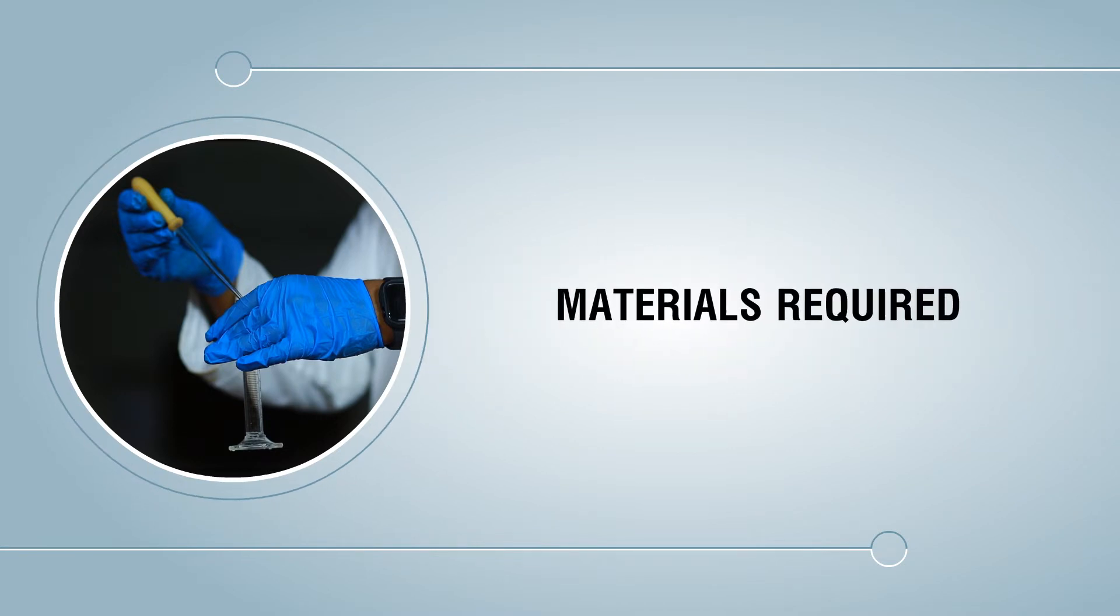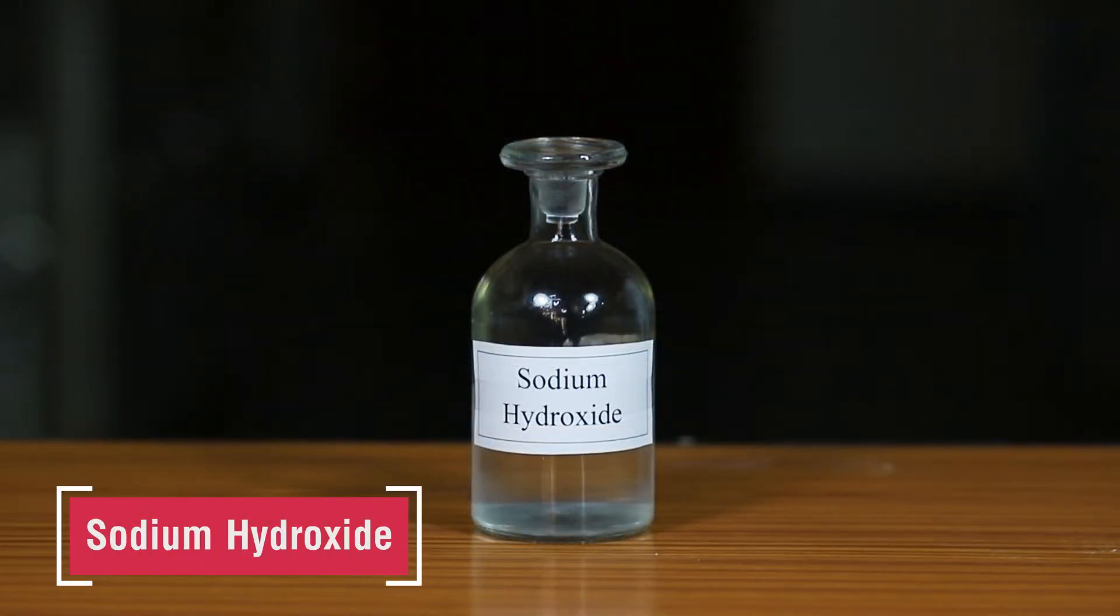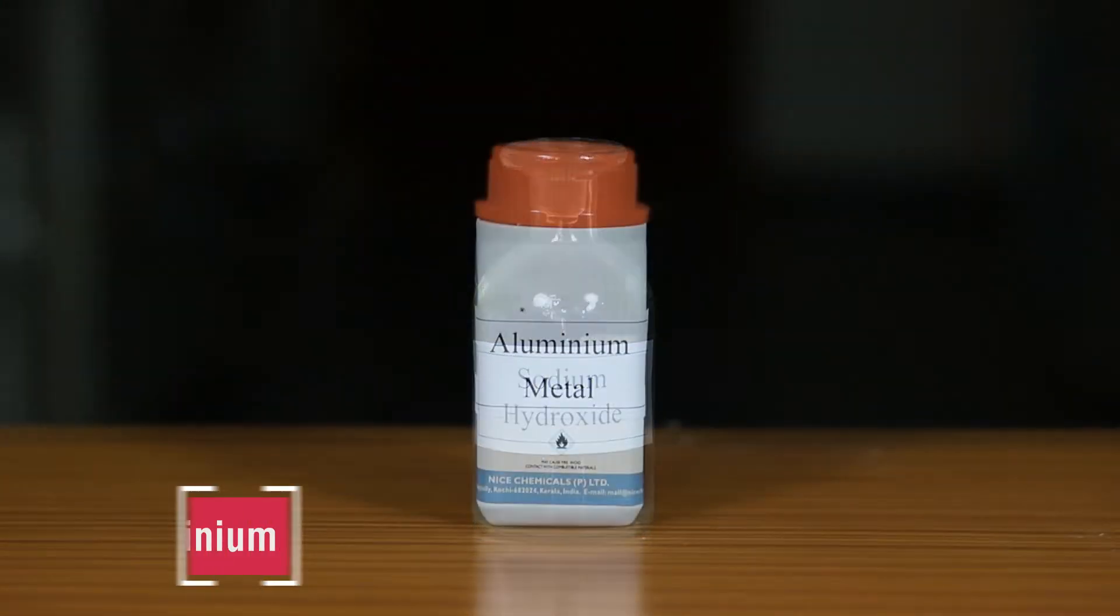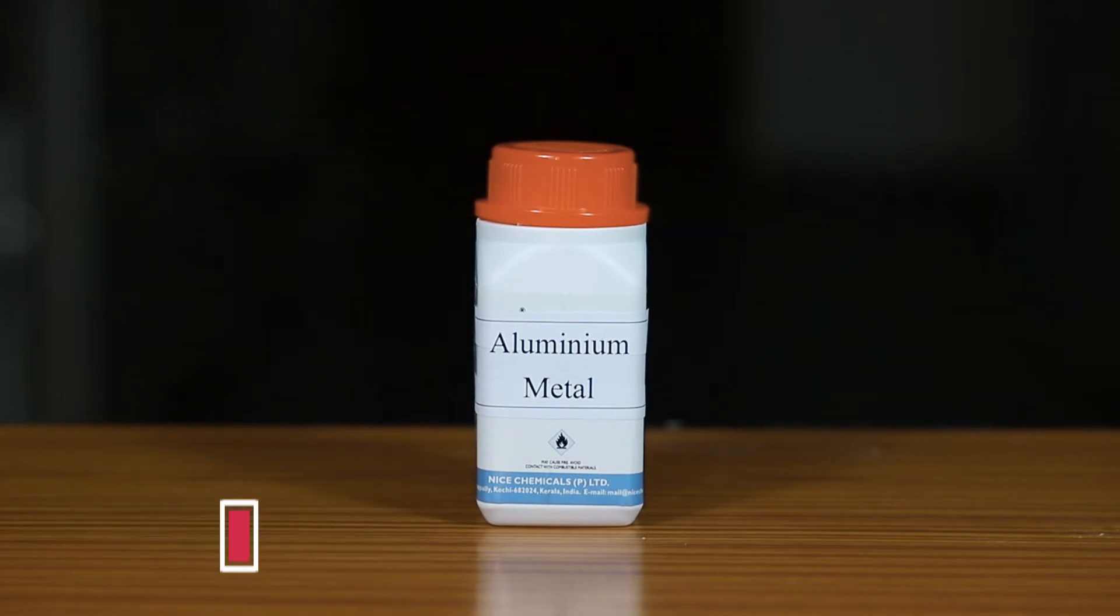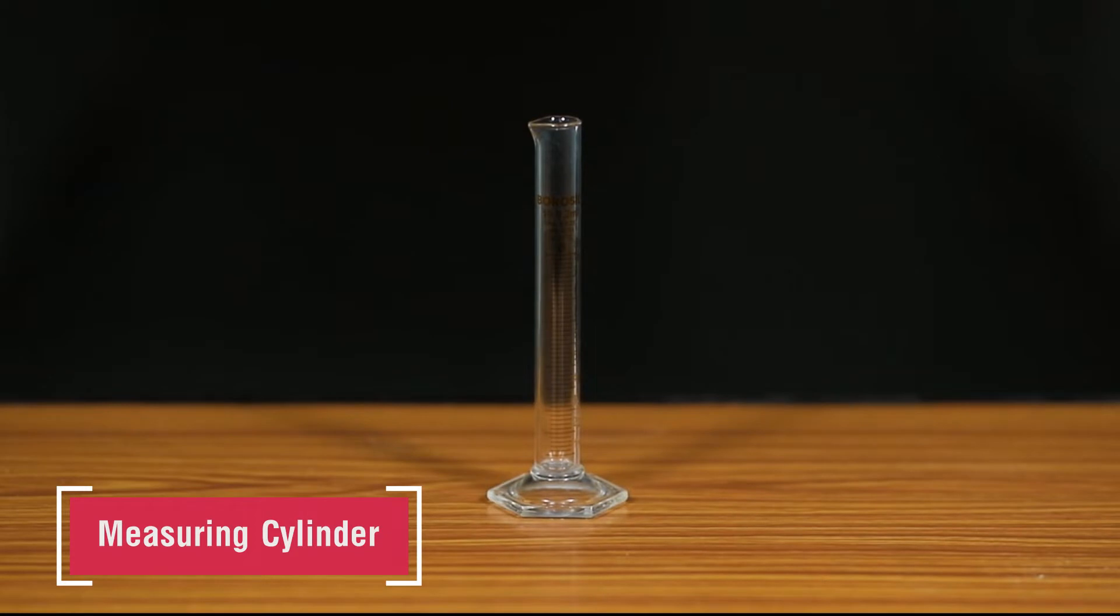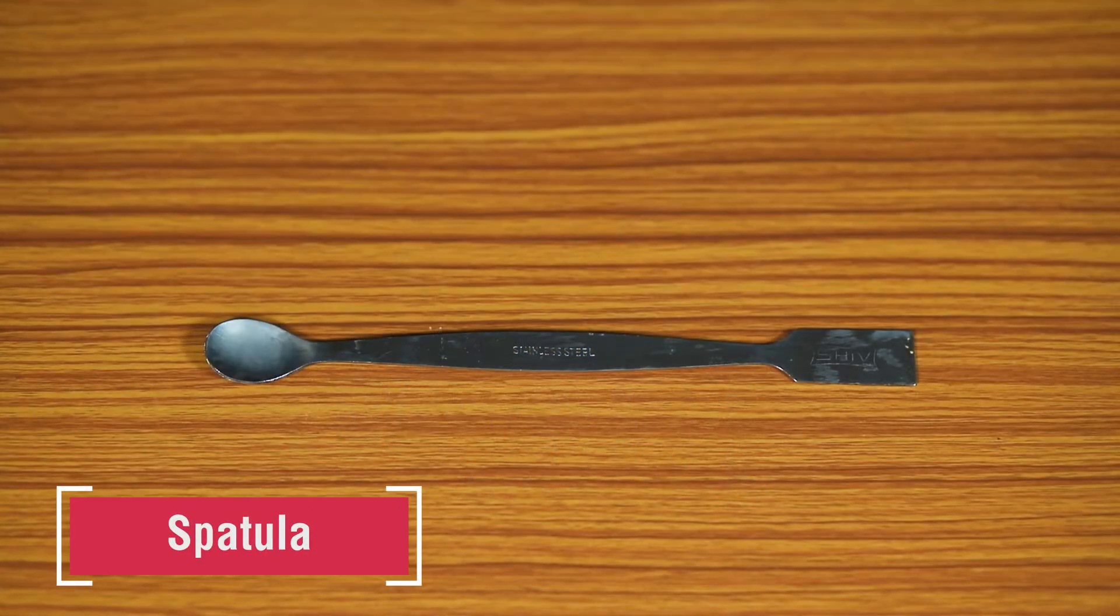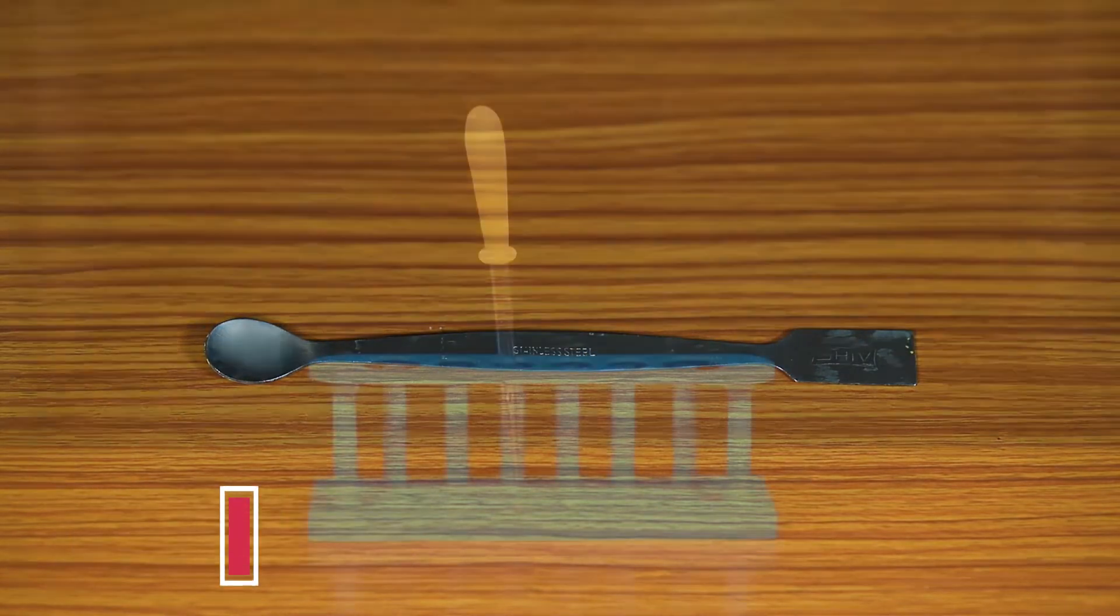Materials required: dilute hydrochloric acid, sodium hydroxide solution, aluminium metal, red and blue litmus papers, measuring cylinder, test tube, spatula, and dropper.